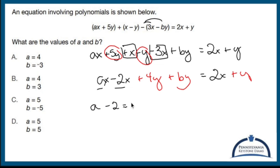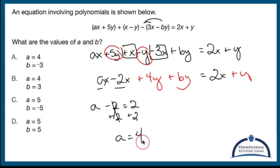If I add 2 to both sides, that gives me A is 4. So what I did is: I need to make A x's — something times x minus 2x has to equal 2x. So if A was 4, then 4x take away 2x gives me 2x. So A has got to be 4, which eliminates two of the answer choices.